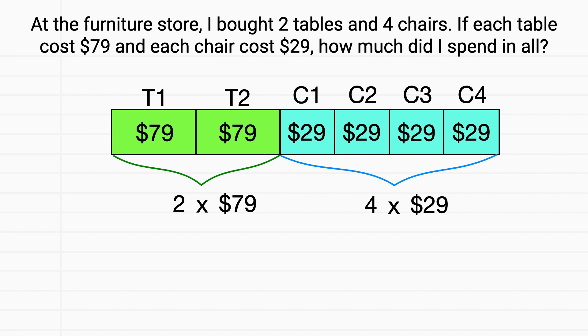Let's focus on our tables first. I'll multiply 2 times 79 like this. 2 times 9, that's 18. Then 2 times 7, that's 14, plus that one we carried is 15. So all in all, 2 times 79 is $158.